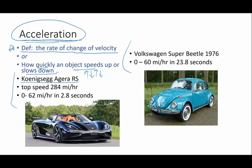the Koenigsegg Agera RS, top speed 284 miles per hour, and it can go from 0 to 62 miles an hour, or 100 kilometers per hour, in 2.8 seconds. Now, that's kind of quick.